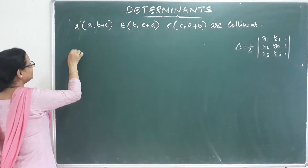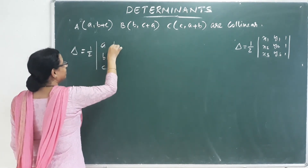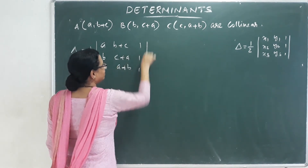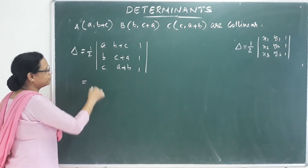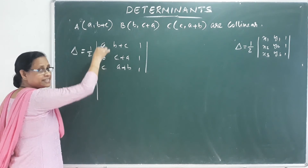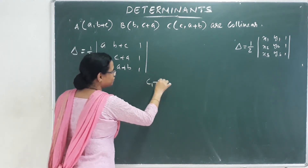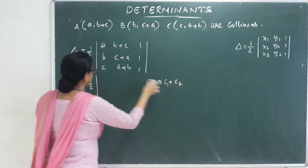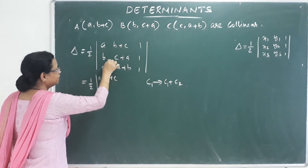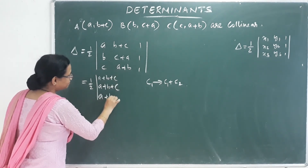Then we go to the delta determinant: half into the determinant with A, B, C in the first column, B+C, C+A, A+B in the second column, and 1, 1, 1 in the third column. Now let's solve this. We call C1 tends to C1 plus C2. That means the first column becomes A plus B plus C for all three rows.